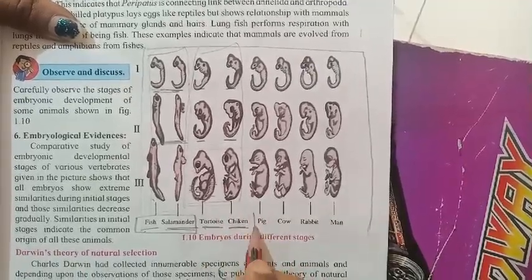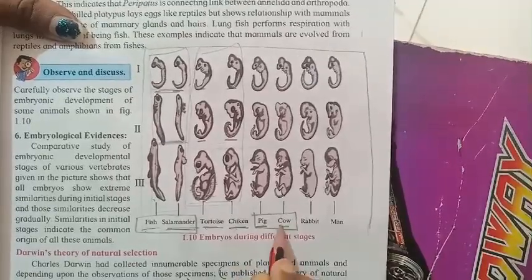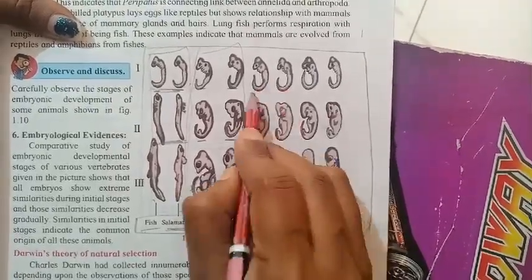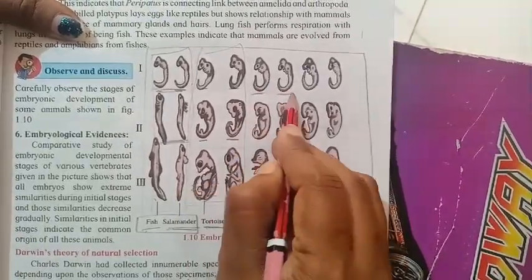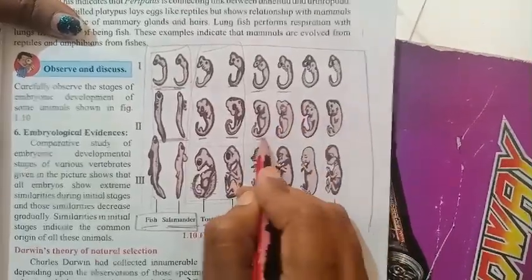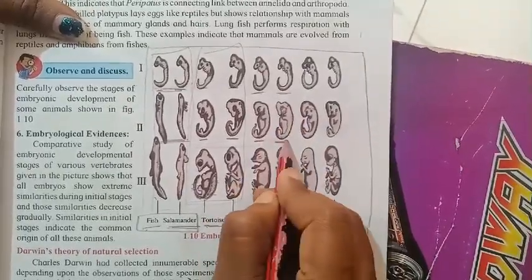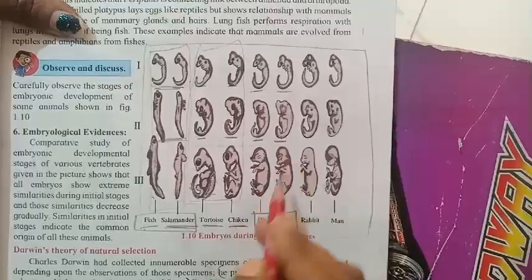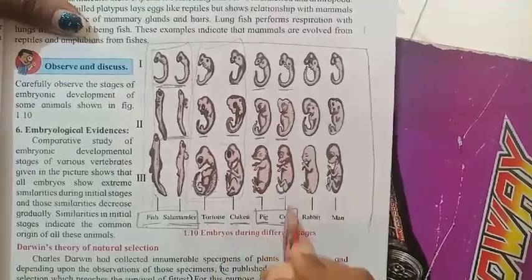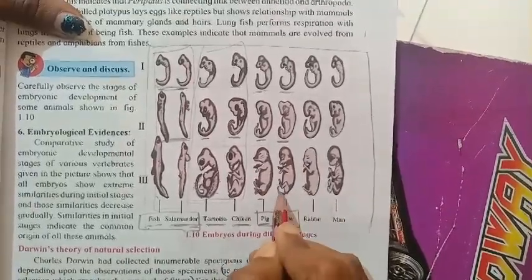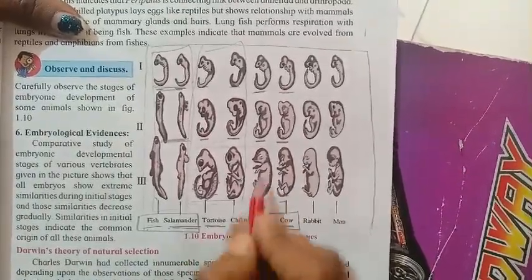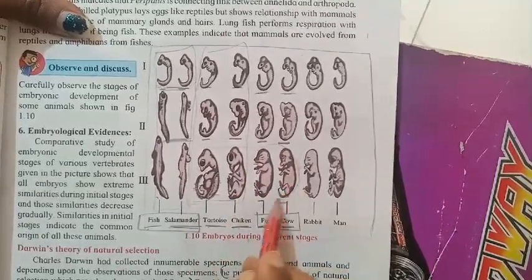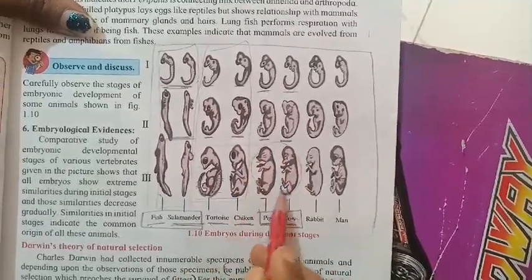The next pair is pig and cow. Their initial stage of embryo is identical. The second stage of development is also very similar. In the third stage, a tail develops, and pig also shows development, with a slight difference in mouth structure, but they still look very similar.